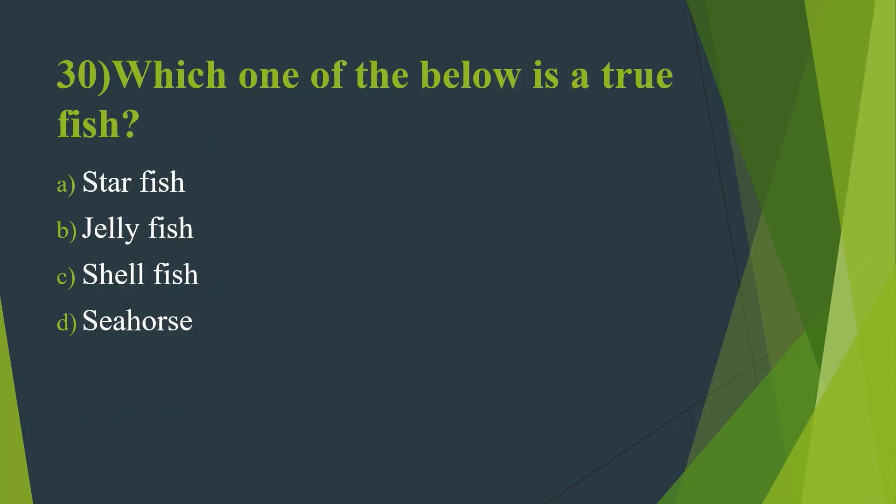Thirtieth question: Which one of the below is a true fish? Option A, Starfish. Option B, Jellyfish. Option C, Shellfish. Option D, Seahorse. Answer is Option D, Seahorse.